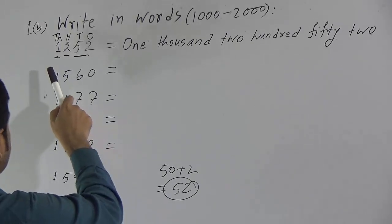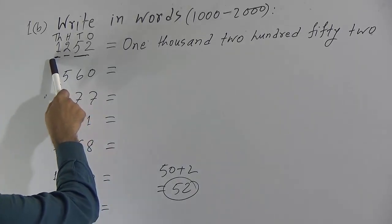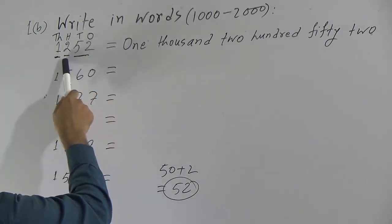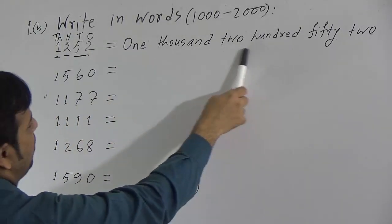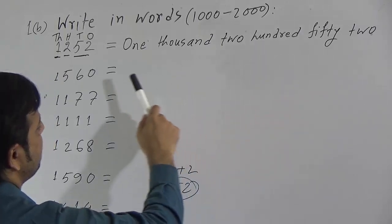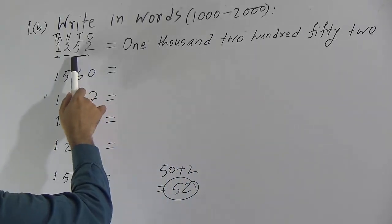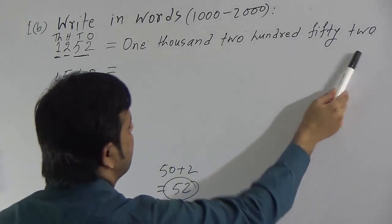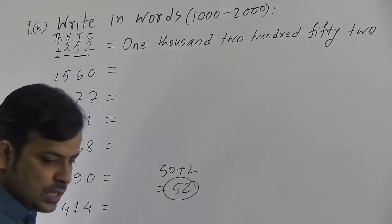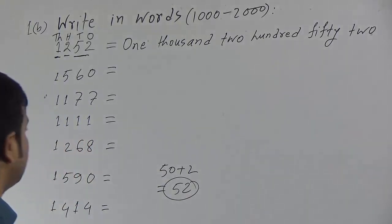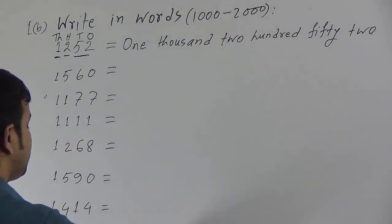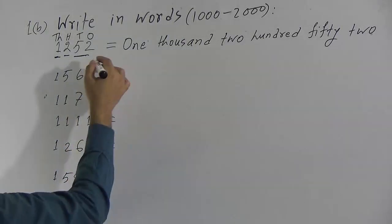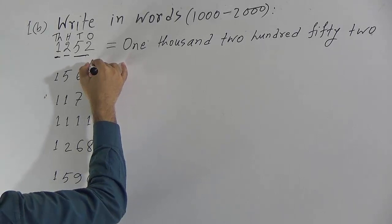So our first number is: 1000, 200, 52. Now I will write the second one. To write the second one, apply the previous technique: 1's, 10's, 100, 1000.